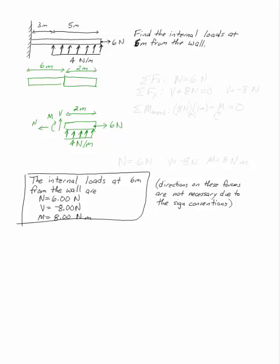Now I can write my equations of equilibrium to figure out what they are. So the sum of the forces in X says N equals 6 Newtons. The sum of the forces in Y, I can replace my distributed load by its equivalent point load and say V plus 8 Newtons, 4 times 2 equals 0. So V is going to be minus 8 Newtons.